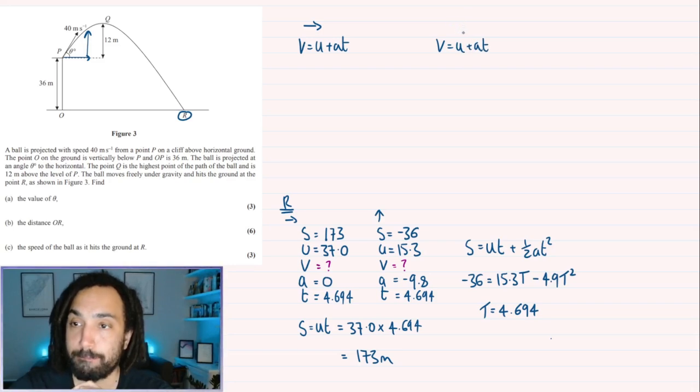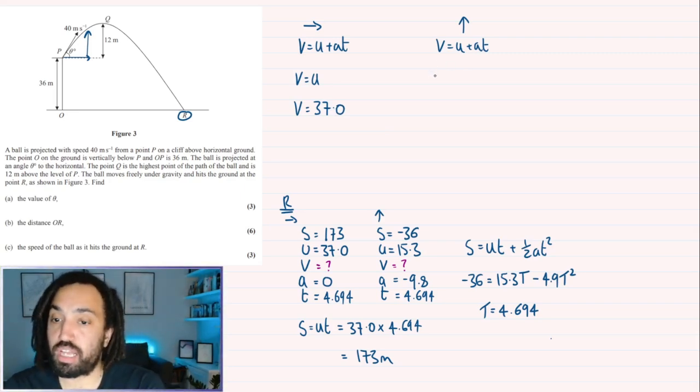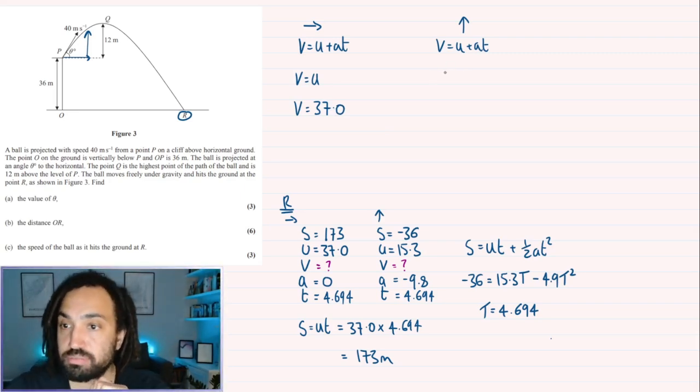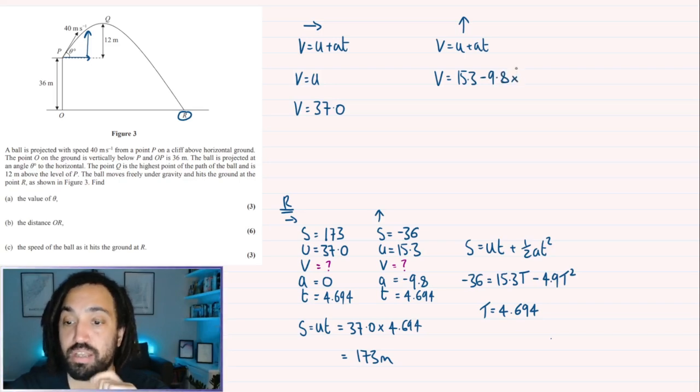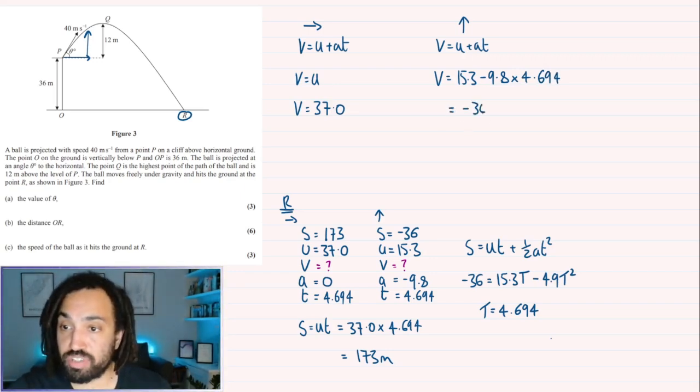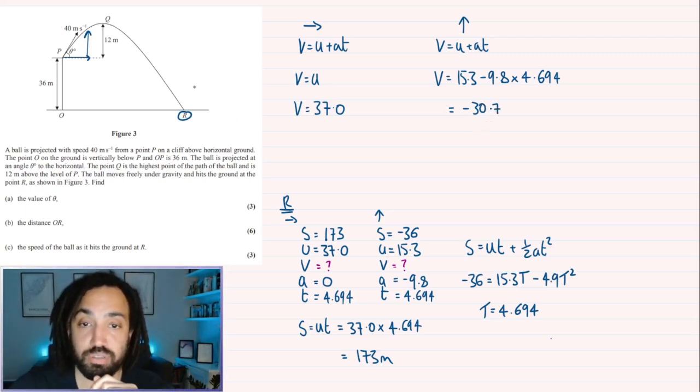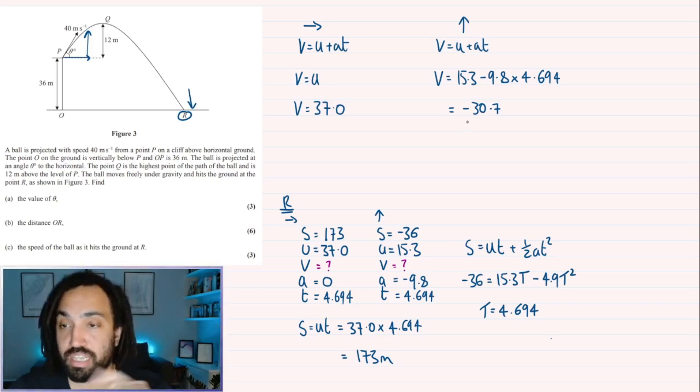OK. So for the horizontal, it's pretty straightforward. There's no acceleration. So V is just equal to U. So V is equal to 37.0. For the vertical, we have V is equal to 15.3 and then minus 9.8 multiplied by T, which is 4.694. And this gives me a value of minus 30.7, which is what you'd expect because the object is traveling downwards when it hits the floor. So it's going to have negative velocity in the vertical.